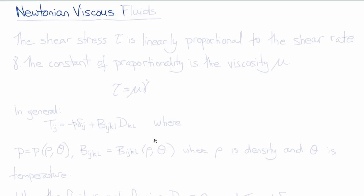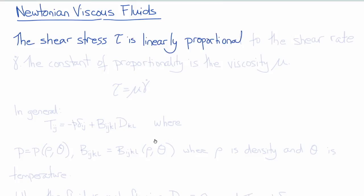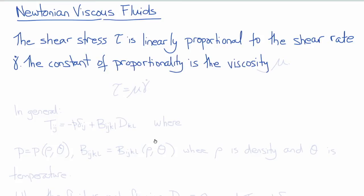Our first example of a constitutive equation will be the constitutive equation for a Newtonian viscous fluid. In a Newtonian or linear viscous fluid, the shear stress tau is linearly proportional to the shear rate gamma dot, and the constant of proportionality is called the viscosity mu. Thus, for a linear viscous fluid, we can write tau is equal to mu gamma dot, where mu is a constant.